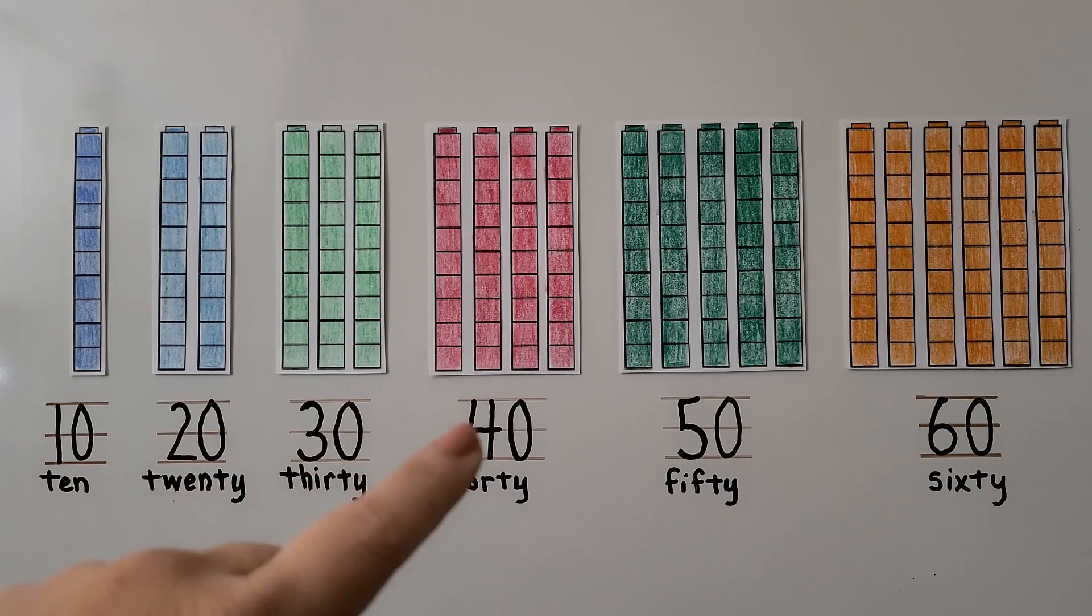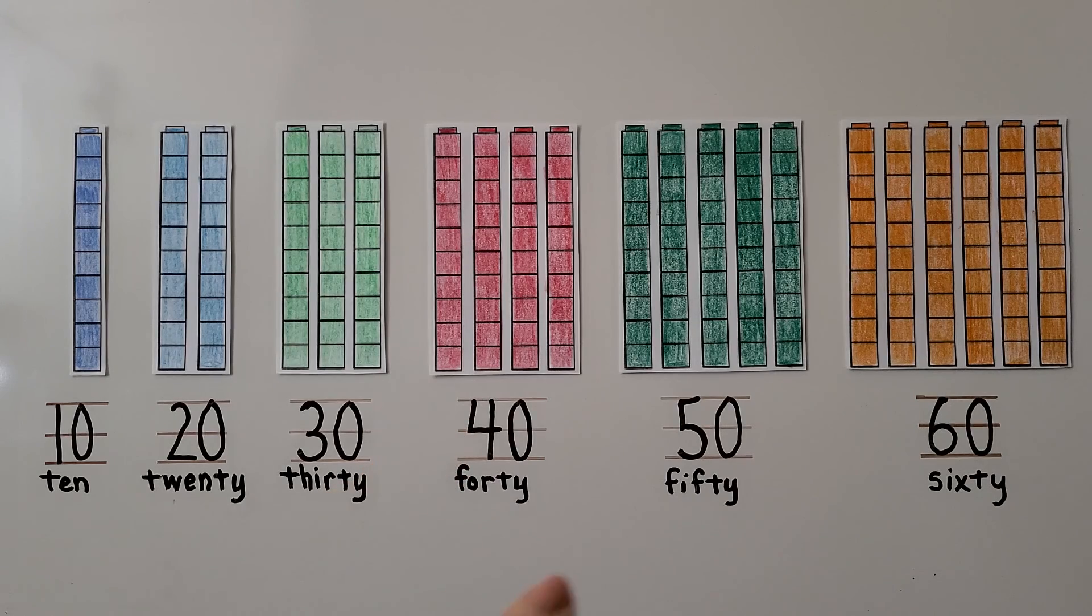We have 4 cube towers. 40 starts with a 4. We have 5 cube towers. 50 starts with a 5. We have 6 cube towers. 60 starts with a 6. And we could keep going up to 100.